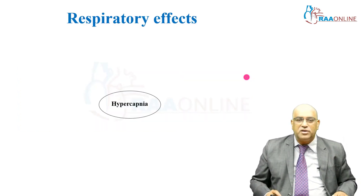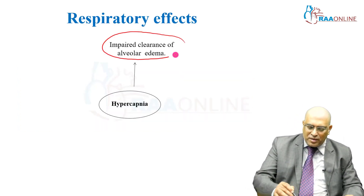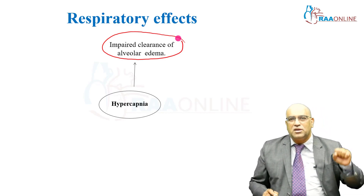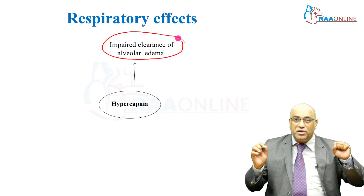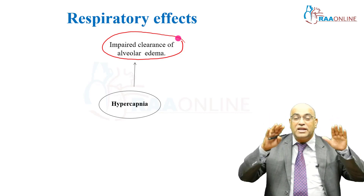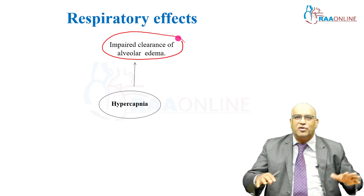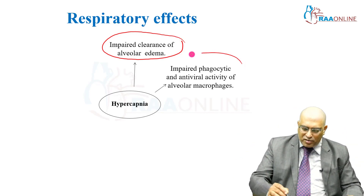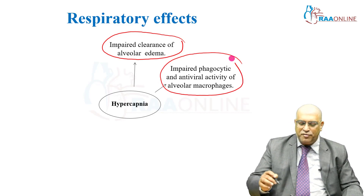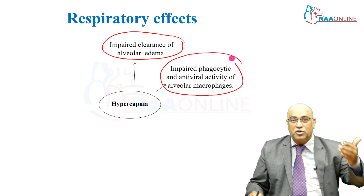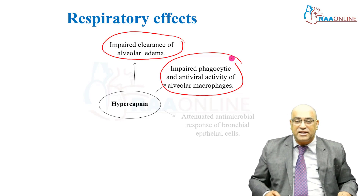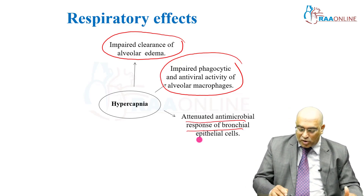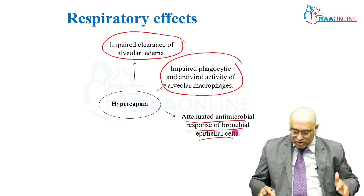Coming to respiratory effects, there is impaired clearance of alveolar edema. When edema happens, hypercarbia should be more effective in removing it, but hypercarbia actually decreases the clearance of fluid so that more fluid accumulates. There is also impaired phagocytic and antiviral activity of alveolar macrophages, increasing respiratory infection, and attenuated antimicrobial response of bronchial epithelial cells, again raising the risk of infection.